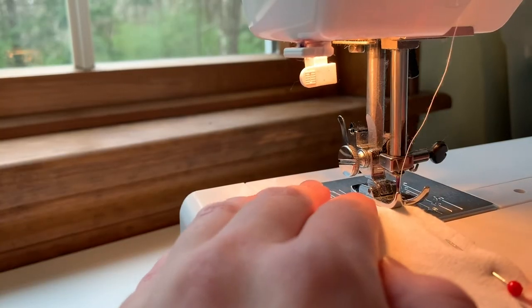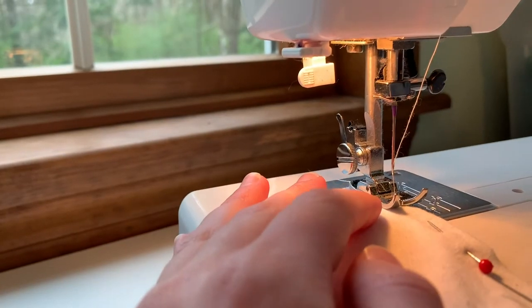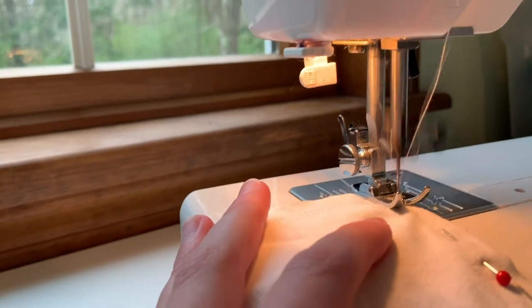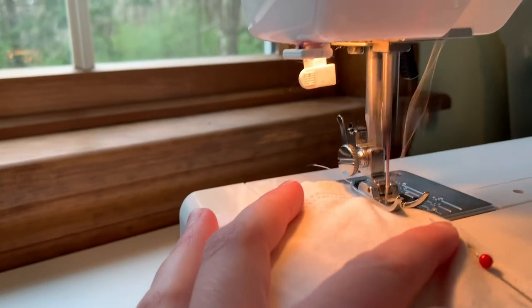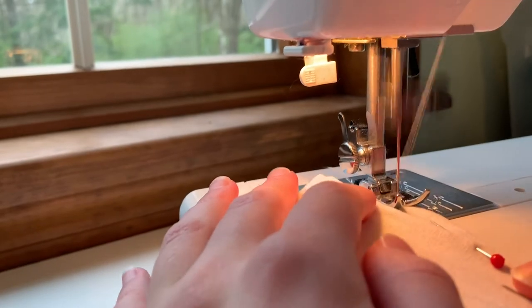To attach the ties, sew over it back and forth several times. You don't want it to come off. Then go ahead and sew the rest of the hem, including the other tie, repeating the same technique.